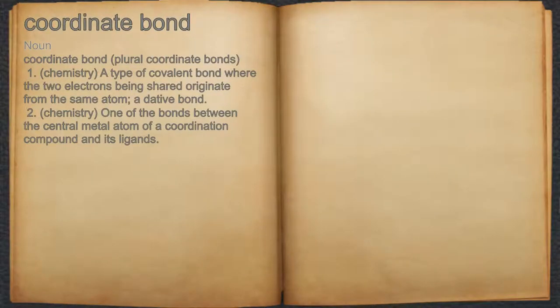Coordinate Bond. Noun. 1. Chemistry: a type of covalent bond where the two electrons being shared originate from the same atom. Also called a dative bond.